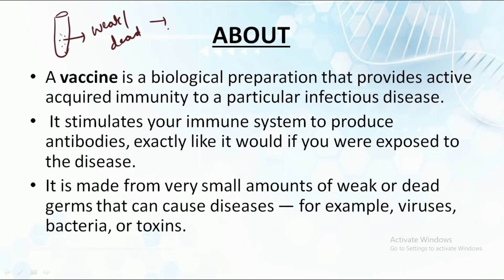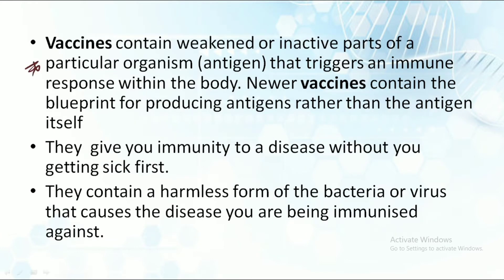When these weak or dead germs are inserted into our body, our body starts to recognize them, so that if in the future these germs attack our body in large numbers, our body would be able to fight against the disease in a better way. Vaccines contain weakened or inactive parts of a particular organism — that is, an antigen — that triggers an immune response within the body.